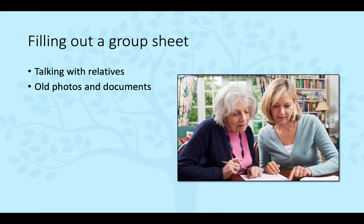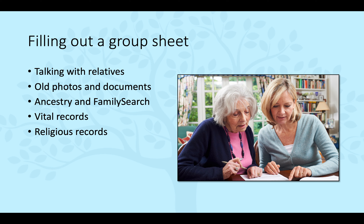You can bring out some photos or documents, talk about them, or look for annotations on the back of photos that can help out. Family letters can be helpful. Of course, you can also use online sources — Ancestry and FamilySearch, which are very popular. Vital records, which are typically birth records, death records, and marriage records, are official government records which usually have pretty good information on them.